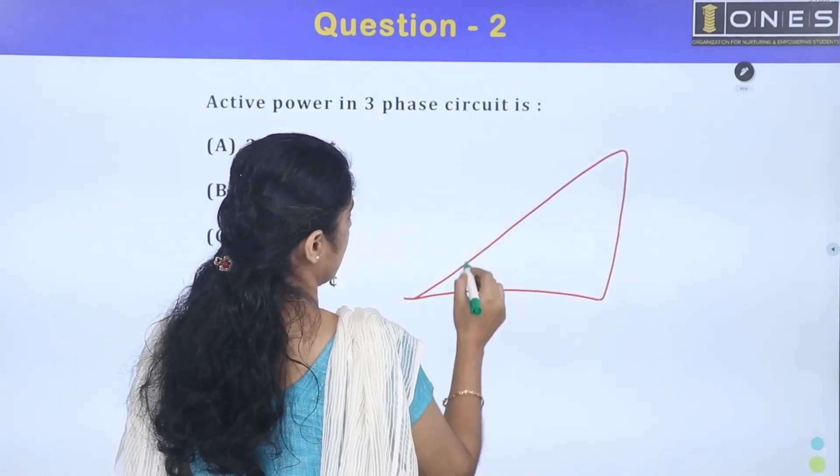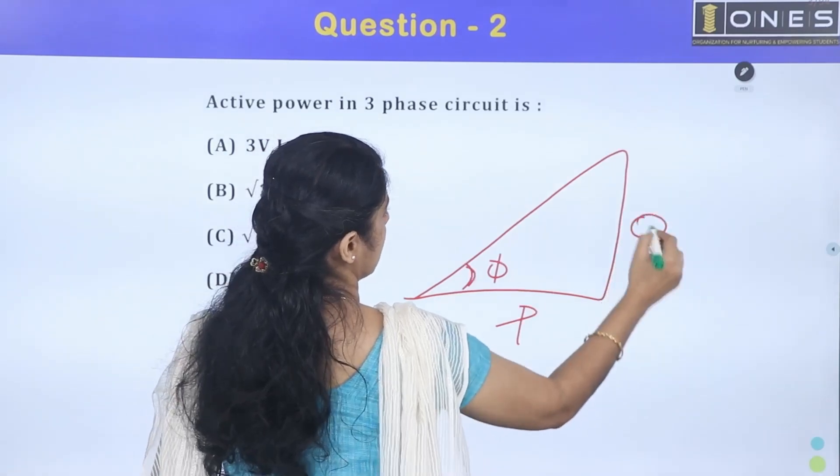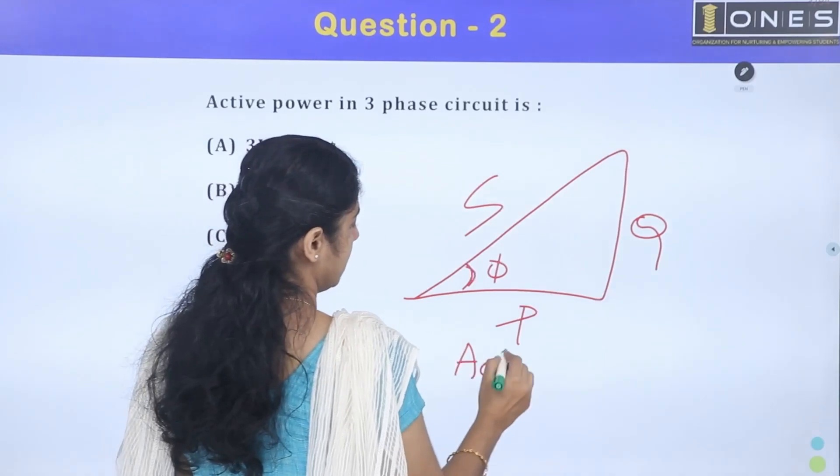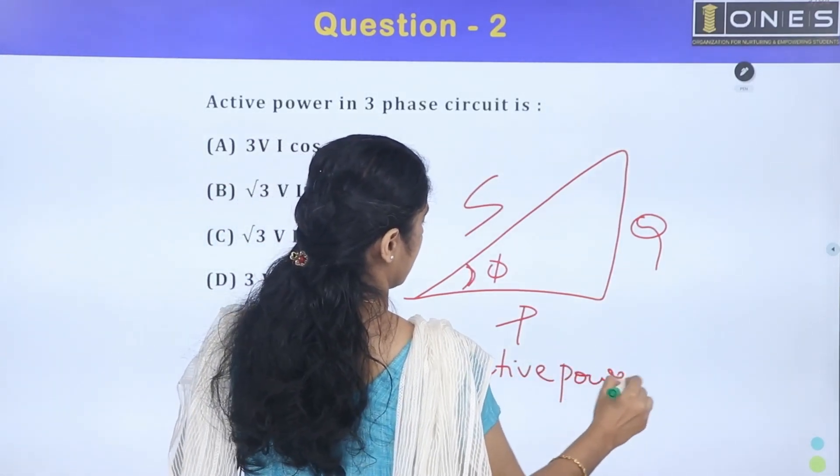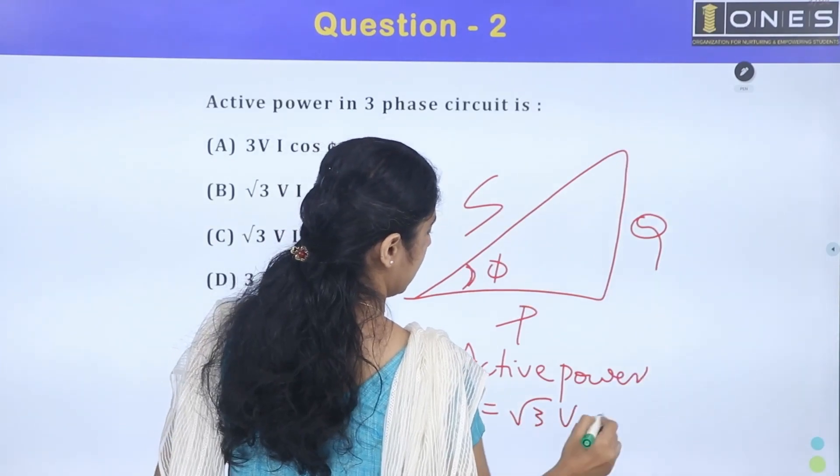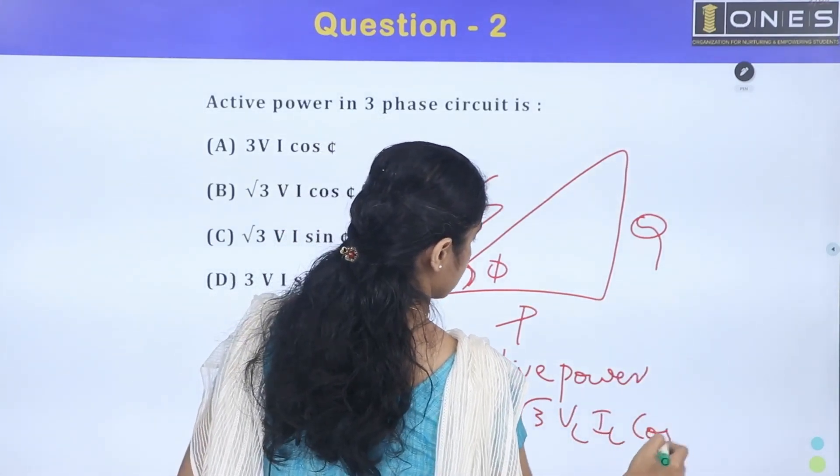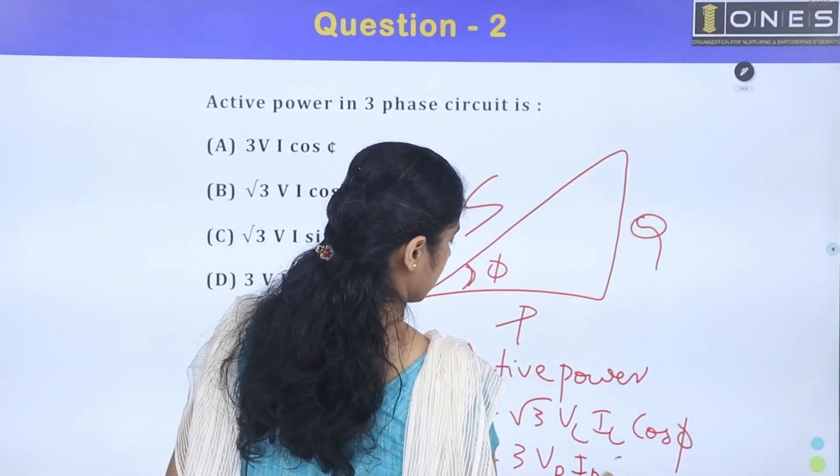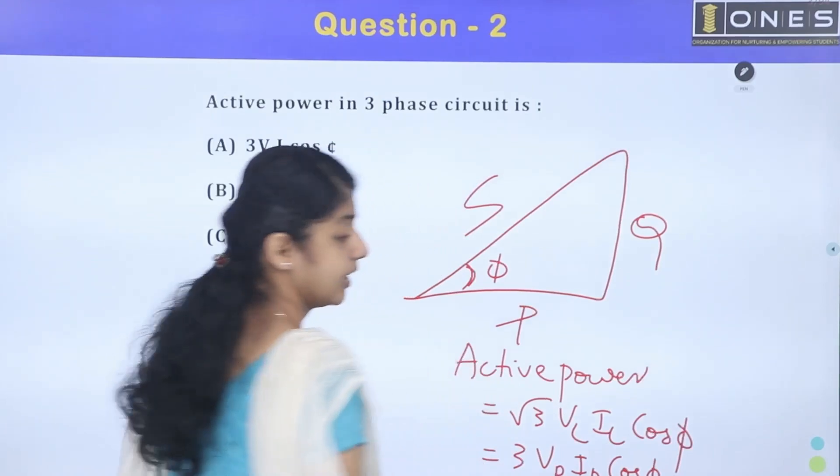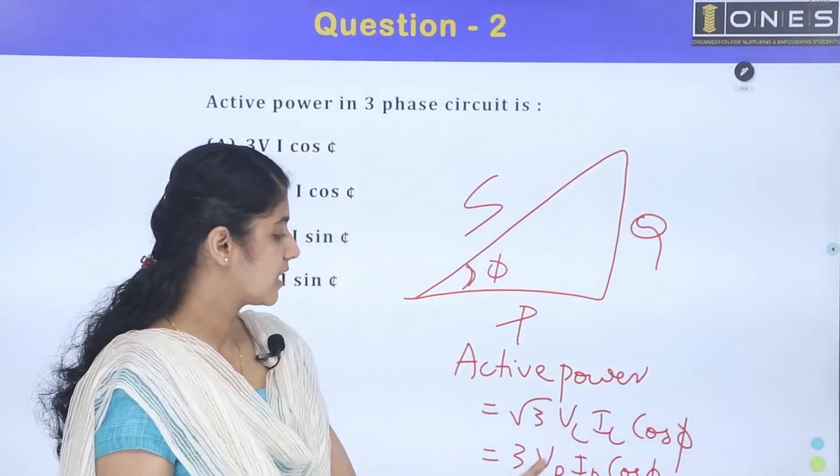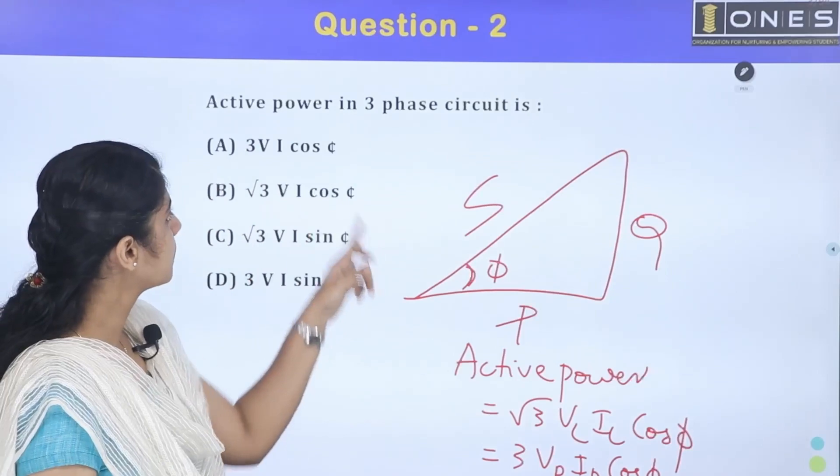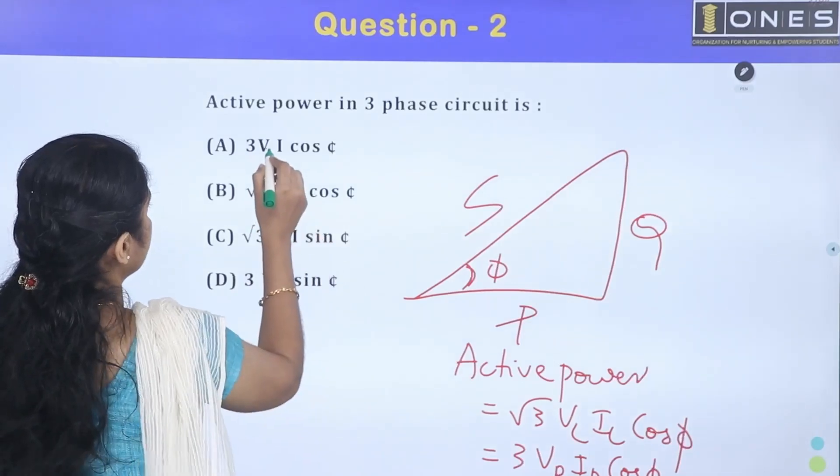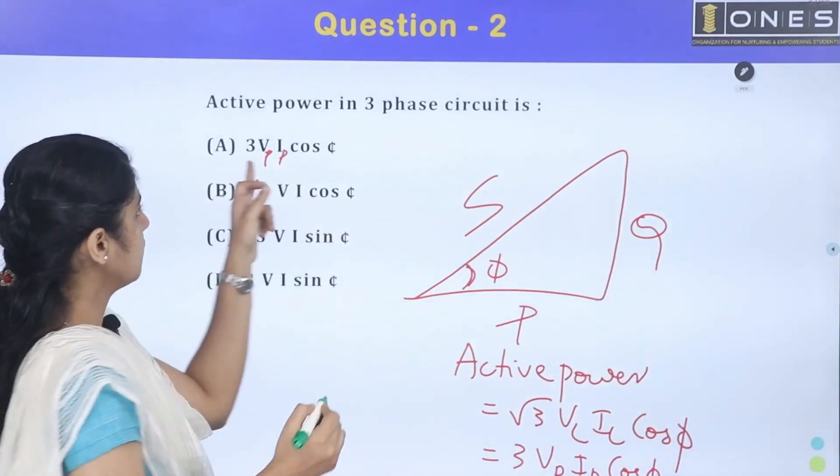This is a power triangle. This is active power, reactive power, and apparent power. Active power is calculated using the formula. For phase value we write 3 VPS IPS cos phi.